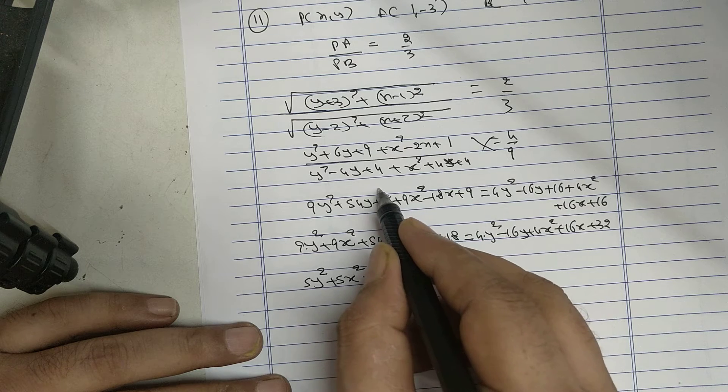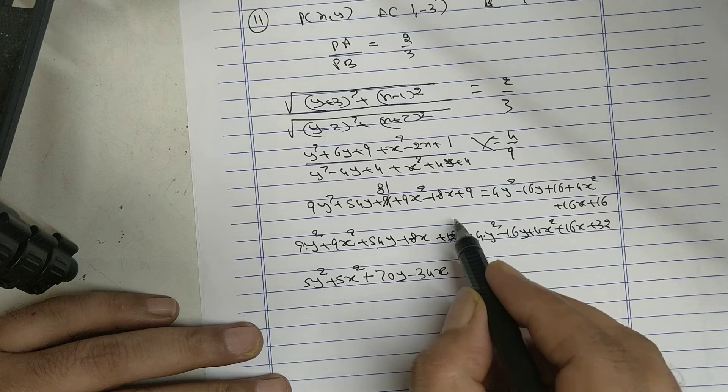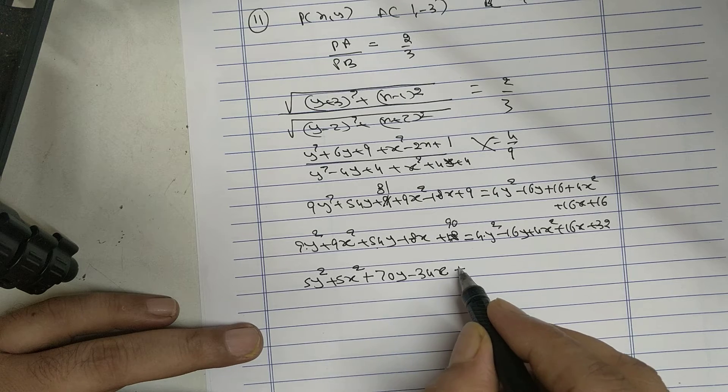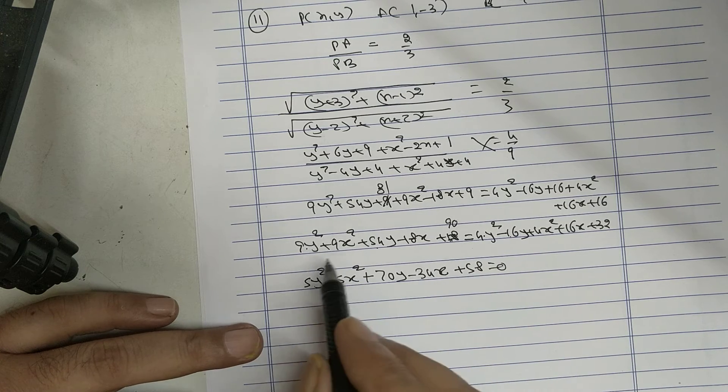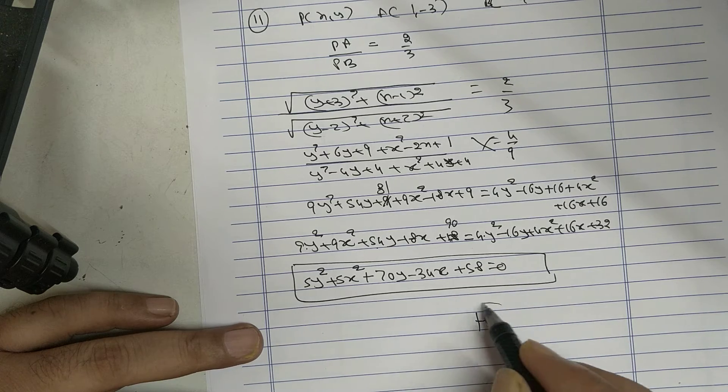This is multiplied wrong. 90 minus 32 is 58, equal to 0. Hence proved.